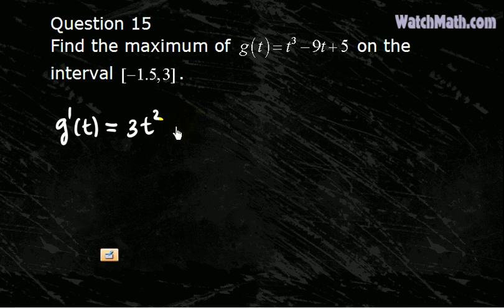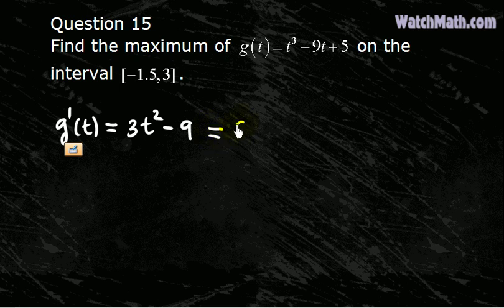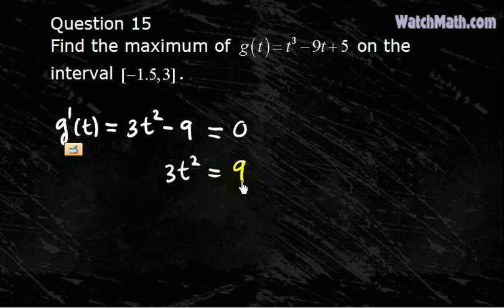And solve this equal to 0 for t. So 3t² equals 9, divide both sides by 3, t² equals 3.